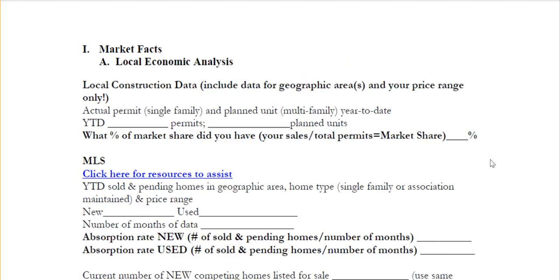Parts one and two today will be market facts. Number one is your local economic analysis. What we're going to start with is local construction data, and this will pertain to both home builders and remodelers. We're trying to get an idea of what your market share is. We want to look at actual permit data, and we're going to include data for the geographic areas that you build in and your price range only. For home builders, you have to figure out what your permit value is worth less some of your costs such as home sites and other things you'd exclude. Figure out exactly what the low to high is as far as a permit range, what the geographic area is, and then find out what the actual permits are for either single family and/or planned unit or multi-family year to date.